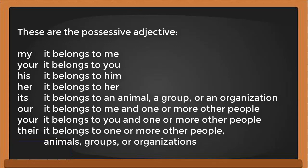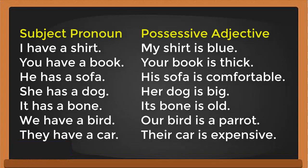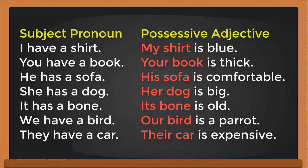Their — belongs to one or more other people, animals, groups, or organizations. From subject pronoun to possessive adjective: I have a shirt — my shirt is blue. You have a book — your book is thick. He has a sofa — his sofa is comfortable. She has a dog — her dog is big. It has a bird — our bird is a parrot. They have a car — their car is expensive.